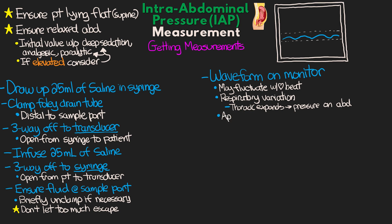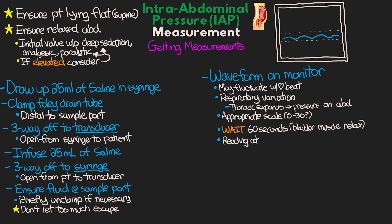Make sure the scale on the monitor is appropriate — you want that pressure waveform taking up most of the display space. Usually 0 to 30 is going to be fine for most measurements. Then wait 60 seconds to allow time for the bladder muscles to relax. After these 60 seconds, the recommendations are to take the reading at end expiration, so that we don't have any additional pressure being exerted from the expanded thoracic cavity. Follow your waveform as it goes up during expansion and comes down to its lowest point — that is when you take your measurement. Record this value and ensure that the provider is alerted, especially if it's greater than 12, then be prepared to initiate potential interventions.